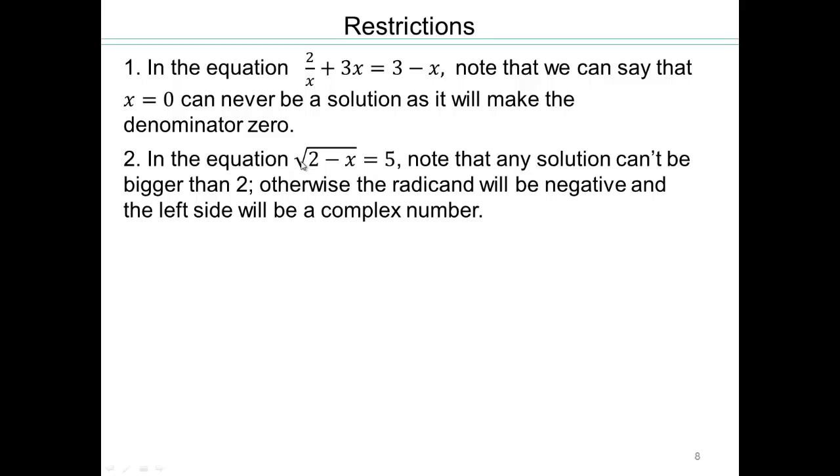What about here? Well, in order for square root of 2 minus x to be a real number, which is what this 5 is, you cannot have a negative number inside the square root.